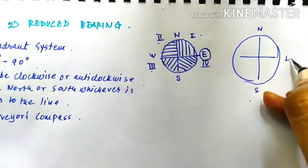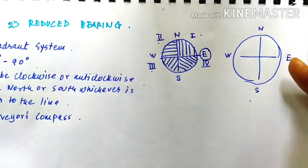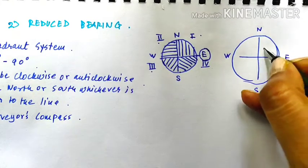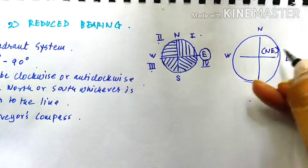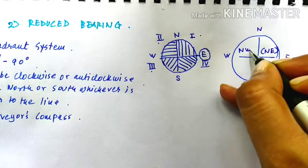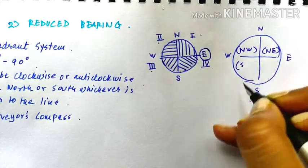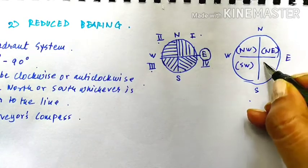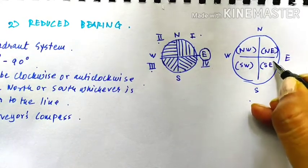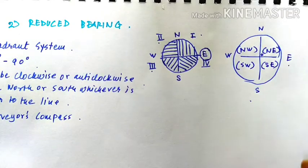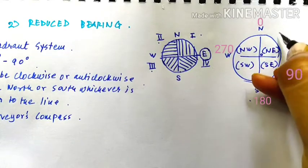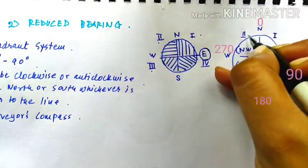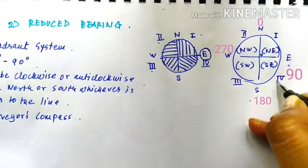North, south, east, west. This is north, east. This is north, west. This is south, west. And this is south, east. This is first. This is second, third and fourth.